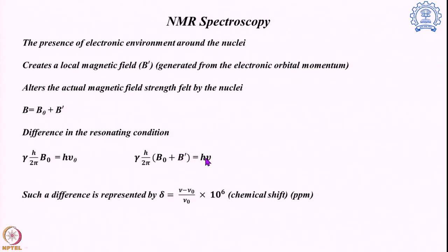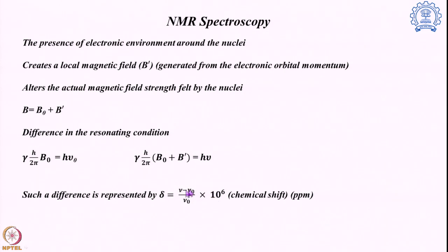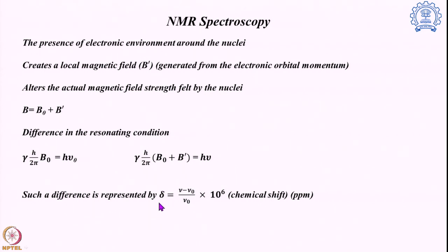The difference between the actual resonating frequency ν and the reference frequency ν₀ is expressed by the chemical shift δ, given by: δ = (ν − ν₀)/ν₀ × 10⁶. The expression (ν − ν₀)/ν₀ is used because, regardless of what external magnetic field B0 is used, this ratio remains independent of the field strength, making δ a universal quantity — constant for any given condition anywhere in the world.